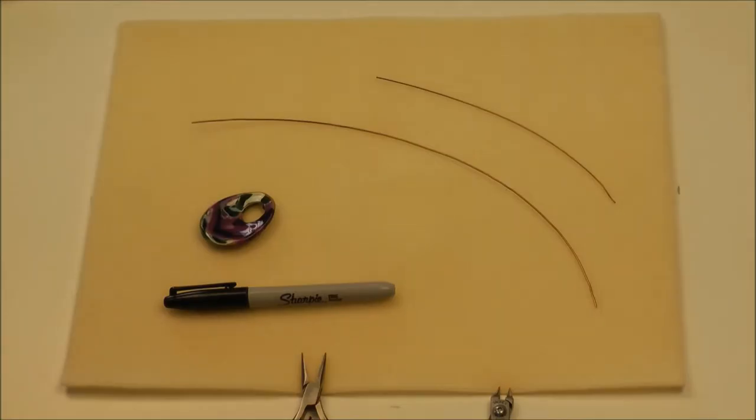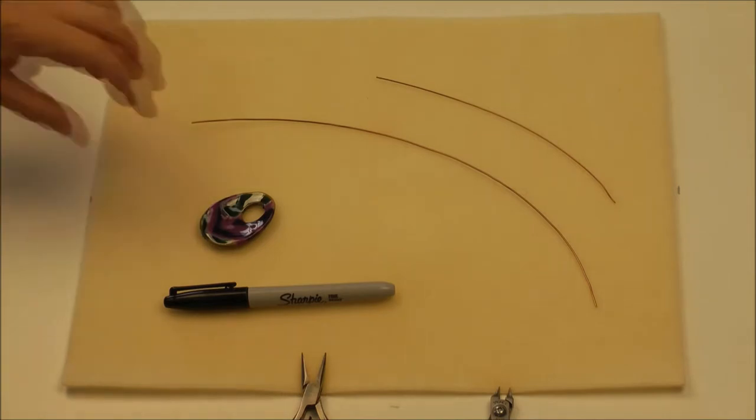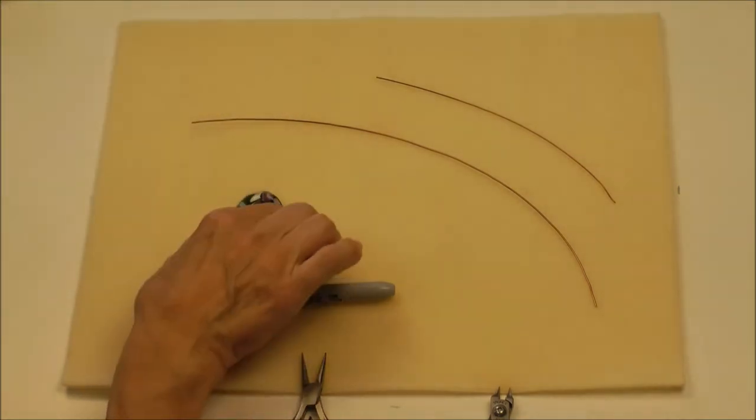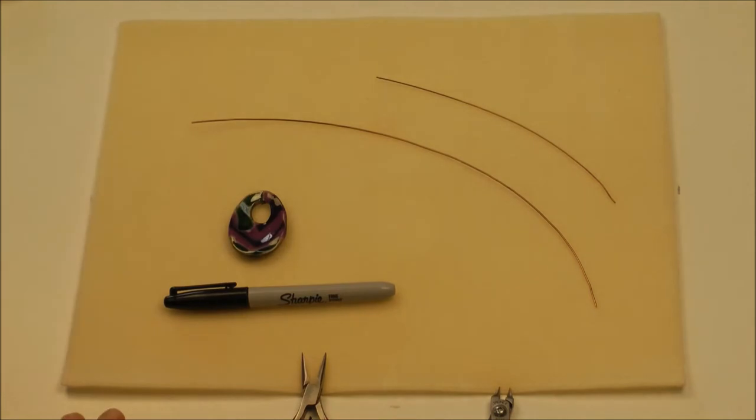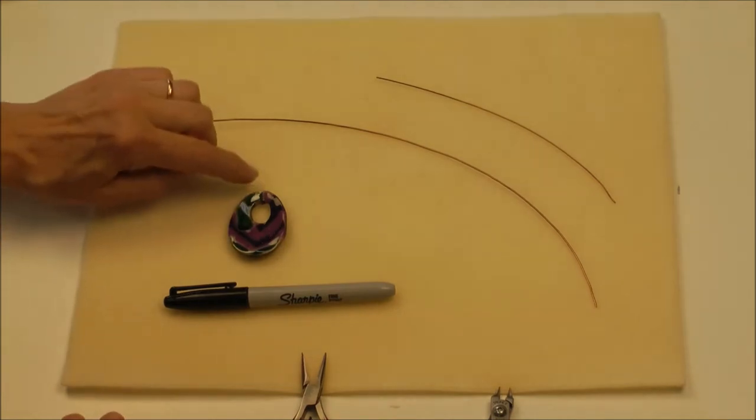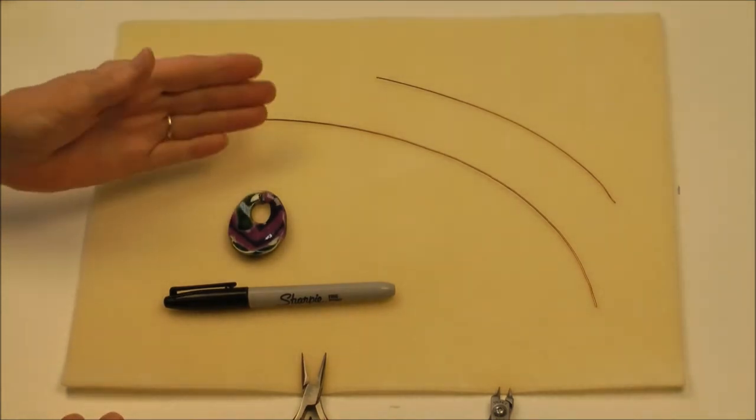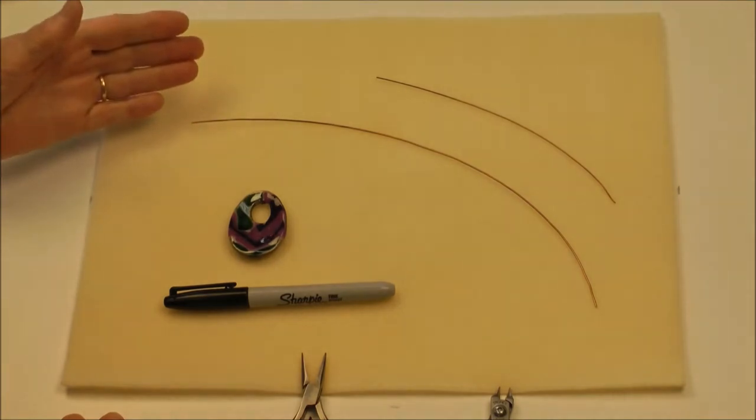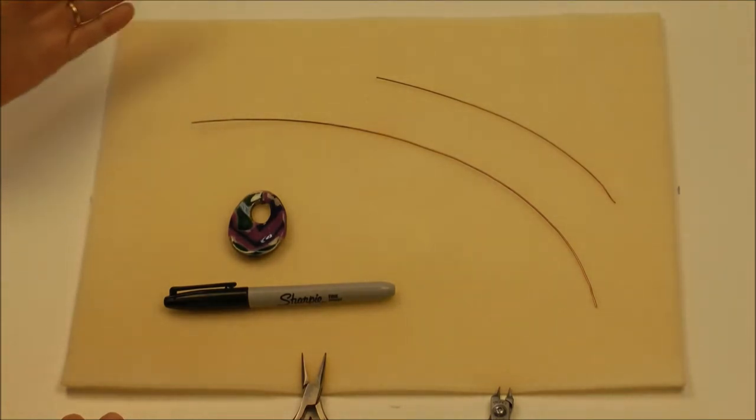Hello, this is Elaine with Antelope Beads, and today I'm going to show you how to make a coil bail. I've got here a gazuri pendant that has a pretty good size hole. The hole is really too big to just accommodate a jump ring, so we're going to use a coil bail to attach this to a cord or chain.